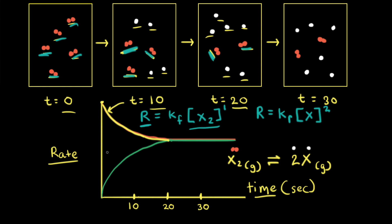Now let's think about the rate of the reverse reaction. At time equals zero, the rate of the reverse reaction is zero, because we start with only X2 and no X is present, so the reverse reaction doesn't happen. But as soon as some X2 turns into X, the reverse reaction becomes possible. As the concentration of X increases, the rate law for the reverse reaction tells us the reverse rate increases as well. That's why we see the rate of the reverse reaction increase as time increases.